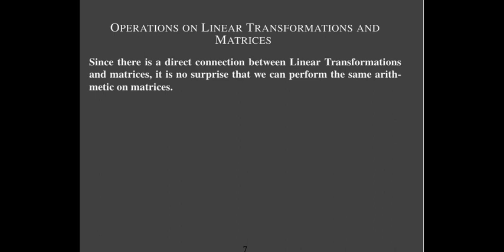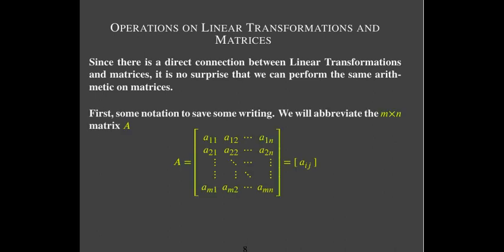We can do the same thing with their standard matrices — we should be able to add, subtract, and multiply them by a scalar. Before we go further, let's introduce this abbreviation. For a matrix with m rows and n columns, rather than writing out all of its entries in full form with indices and continuation dots, we'll use the simple abbreviation: brackets aij, where i is the row index going from 1 to m, and j is the column index going from 1 to n.